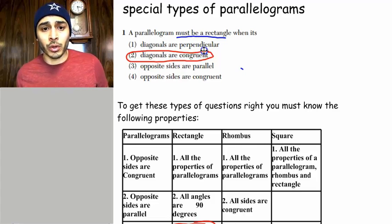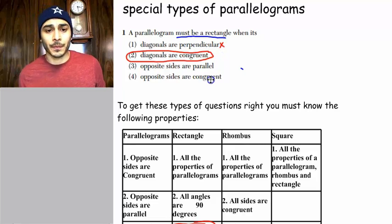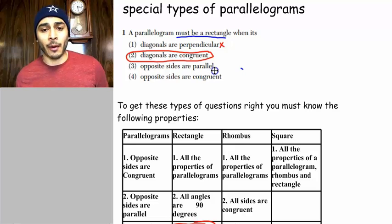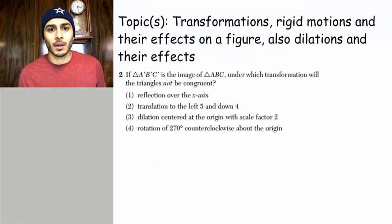Choice one would prove that the parallelogram is a rhombus, so it's not choice one. And then opposite sides are parallel. Well, that's just true for all parallelograms. And same thing with choice four.